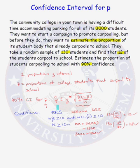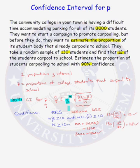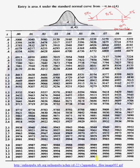We know what P-hat is — it's 12 out of 130. We know what N is — that's 130. We still need to find our critical value for a 90% confidence interval. We need to go to a standard normal table to find our critical value. What percentile do we want to look up in our standard normal table to find our critical value for a 90% confidence interval?